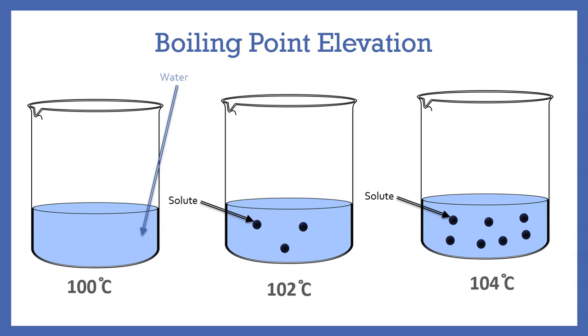Let's add more solute particles. For this to boil, it will need to be at 104 degrees Celsius. So the more solute particles in a solution means the higher the boiling point.